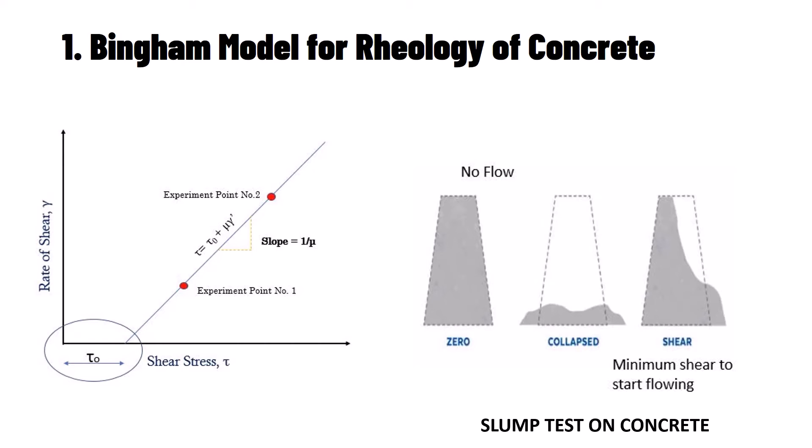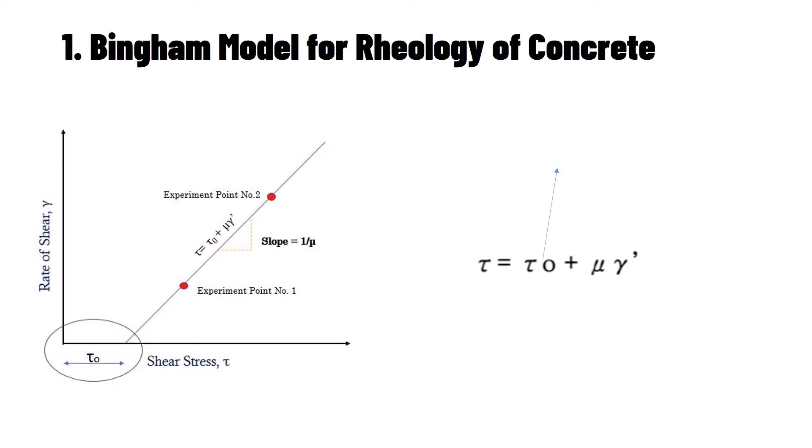Simplest flow equation for concrete can be given as τ = τ₀ + μγ̇. Here, τ₀ is a yield value that indicates the cohesion of the material. μ represents the plastic viscosity that is a constant value giving dimensions of viscosity and this relation is what we call as Bingham model.